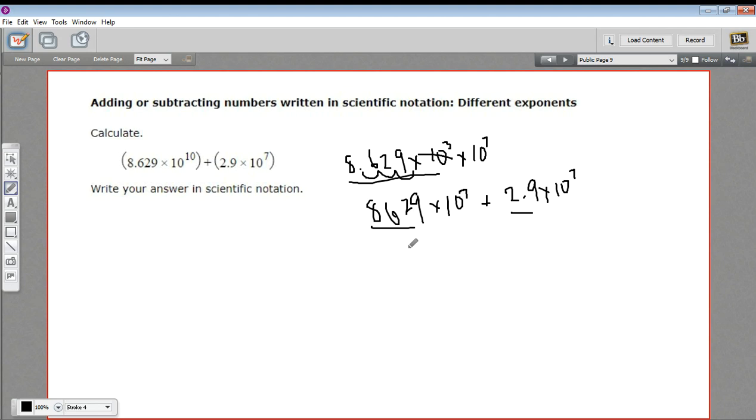So 8,629 plus 2.9. I think I'll line it up here. Here's the decimal point. So that's got to line up like that. So I'm going to have a 0.9. 9 and 2 is 11. Carry the 1.